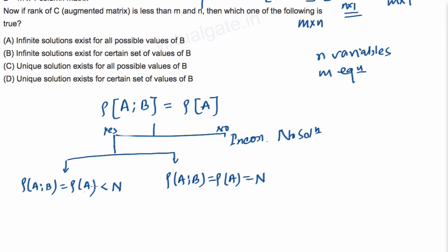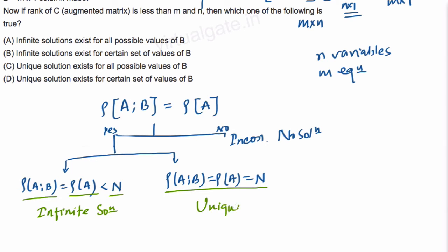If yes, we have two conditions. The rank of the augmented matrix equals the rank of the coefficient matrix and is less than n — the number of variables — giving infinite solutions. If it equals n, we have a unique solution. Now the question is: why don't we have the case where the rank of the augmented matrix is greater than the number of variables?